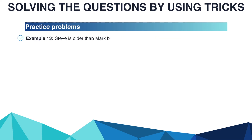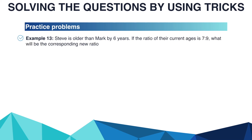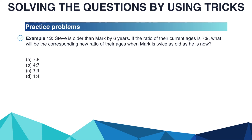Next example: Steve is older than Mark by 6 years. If the ratio of their current ages is 7 to 9, what will be the corresponding new ratio of their ages when Mark is twice as old as he is now? Options are A: 7 to 8, B: 4 to 7, C: 3 to 9, D: 1 to 4.